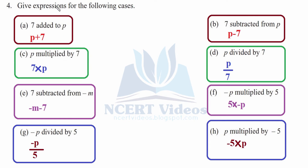Question 4: Give expressions for the following cases. We will do the opposite of the earlier question. 7 added to p: in p, 7 is getting added, so we write p plus 7. Here, p and 7 is getting subtracted — therefore, we write p minus 7, not 7 minus p. That will be wrong. Only p minus 7 is correct because we are subtracting from p, not from 7.